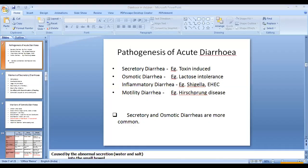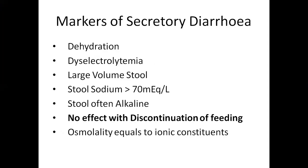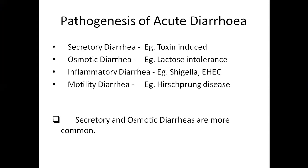The typical example of osmotic diarrhea is lactose intolerance, which occurs because of disaccharide deficiency - specifically lactase deficiency. The main treatment for lactose intolerance diarrhea is dietary modification. Inflammatory diarrhea is related to Shigella and enterohemorrhagic E. coli. Motility diarrhea is due to defects in the GI system like Hirschsprung's disease - chronic constipation followed by diarrhea.